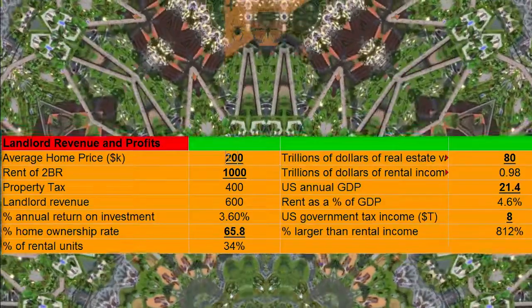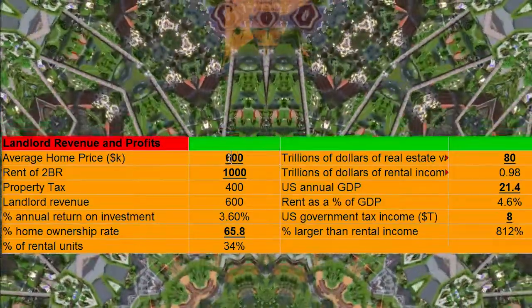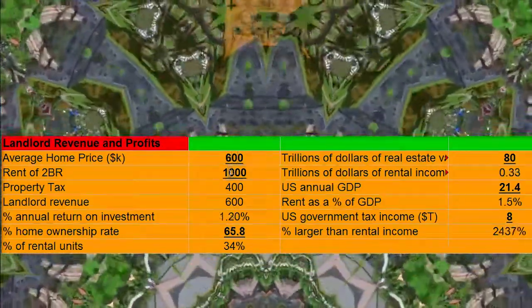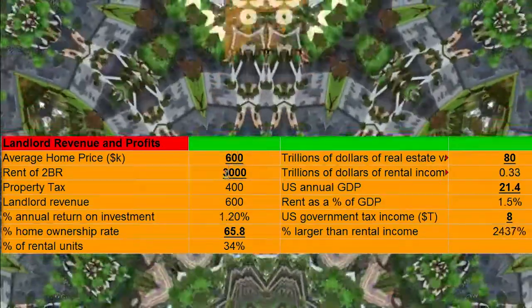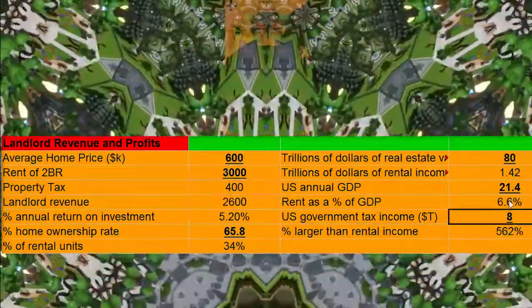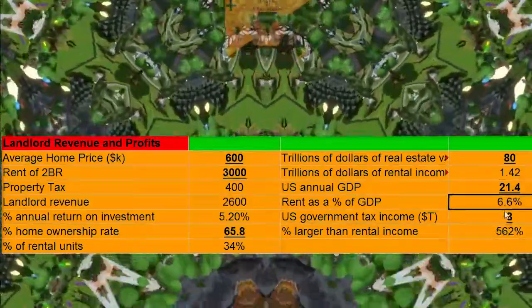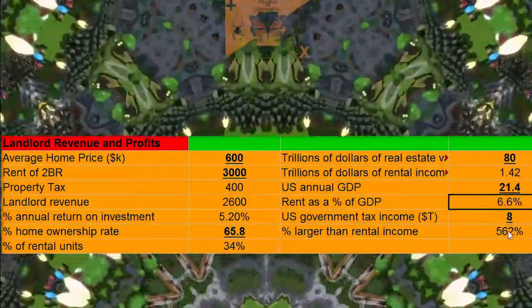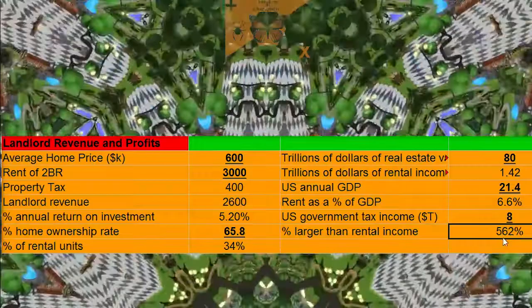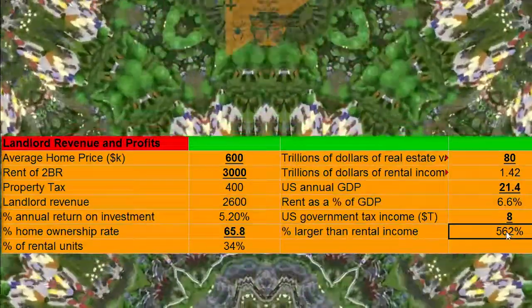If you increase this to $600,000 — let's say you're in a liberal hellhole — $3,000 rent, you're up to 6.6% return on investment, and only 560% taxation ratio.